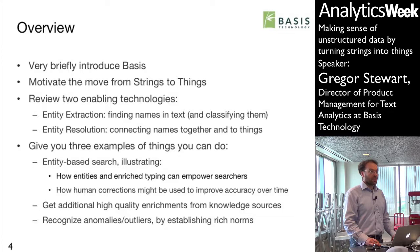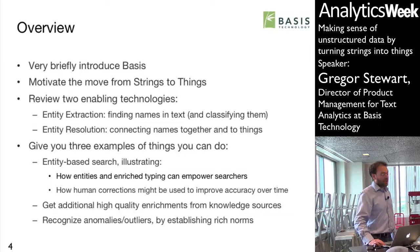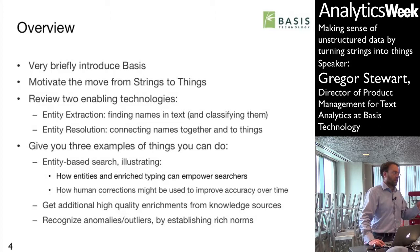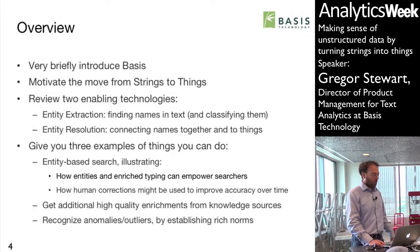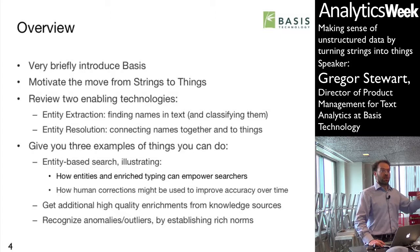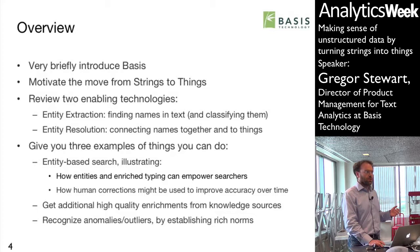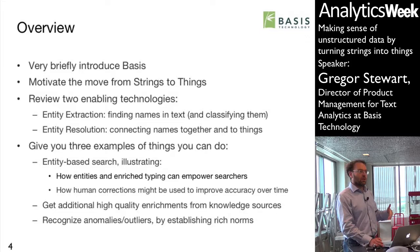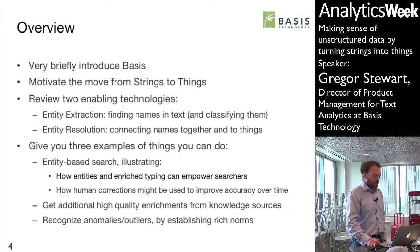I'm going to briefly introduce the company and myself, motivate the move from strings to things, and review a couple of enabling technologies. There's also a new thing we've developed recently that I'll talk about: entity extraction — finding names in text and classifying them — and then the new thing, resolution, which is connecting the names together and to things via proxies like knowledge sources like Wikipedia. I'll give you three examples, really one long entity search-based example illustrating how enriched typing can help when searching for specific things in complex searches.